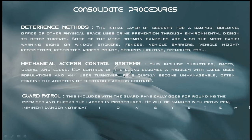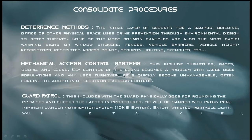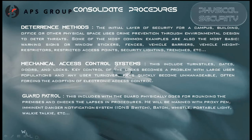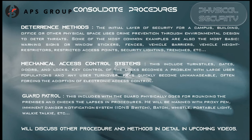The guard patrol system is a physical security process where a security guard is deployed to patrol the premises. The guard physically rounds the premises, checks for lapses, and follows set procedures. They are equipped with a proxy pen, an imminent danger notification system (IDNS) switch, baton, whistle, portable light, and walkie-talkie — tools used to alert others when an incident is occurring or has just happened and needs to be investigated.